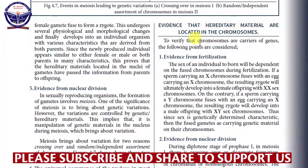Firstly, there is the evidence from fertilization. This may look similar to the evidence for the location of genetic material in the nucleus, but this is something different — because here we are talking about the fusion of chromosomes, not the fusion of nuclei. We are talking about the fusion of chromosomes. The sex of an individual to be born will be determined by the fused chromosomes during fertilization.